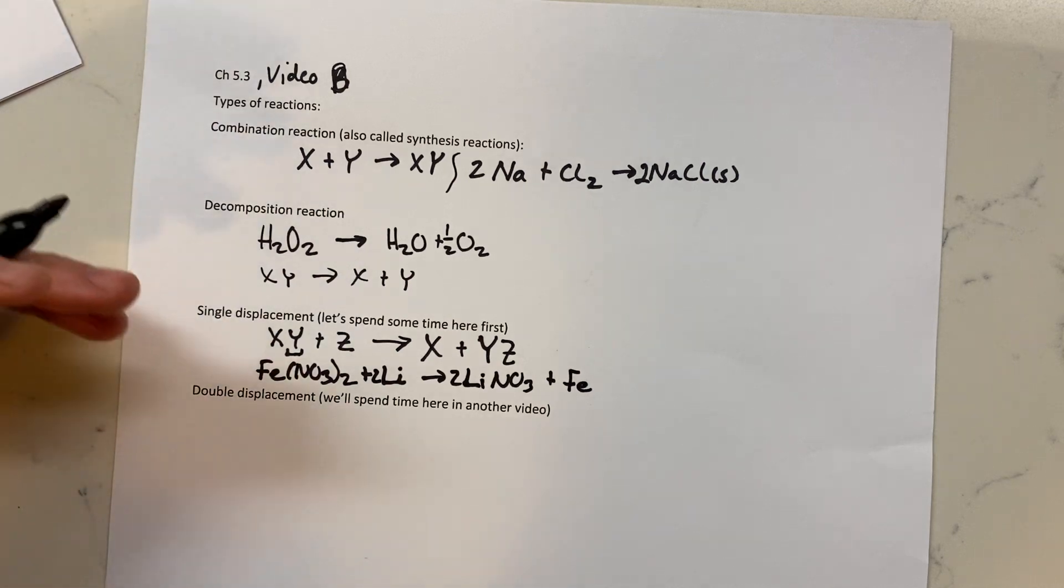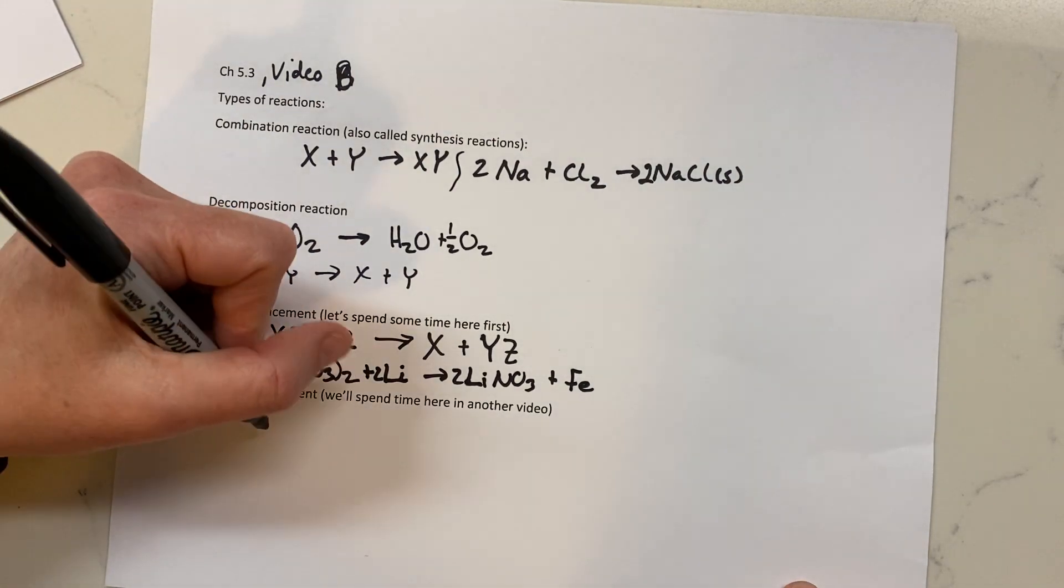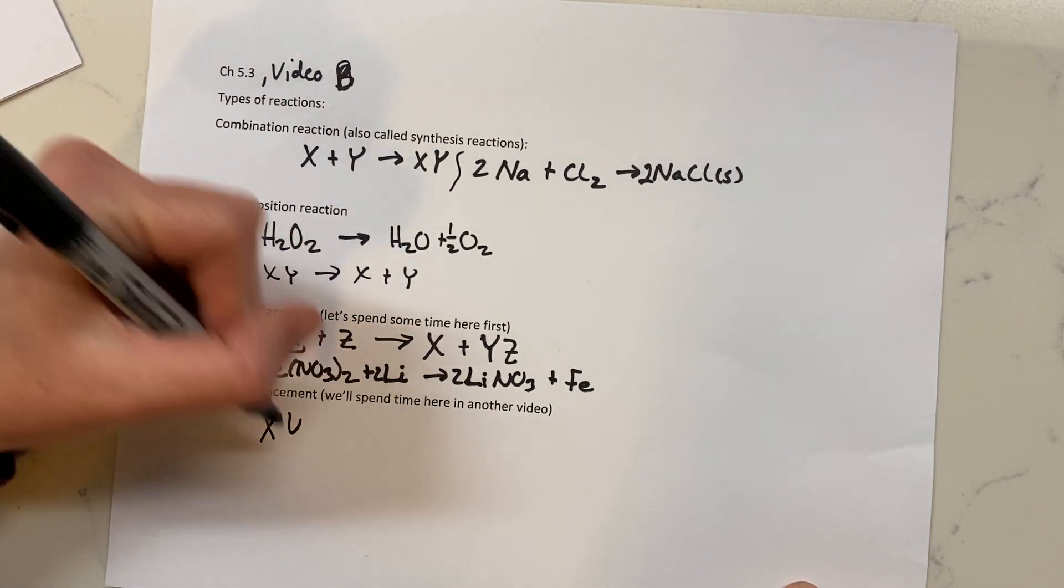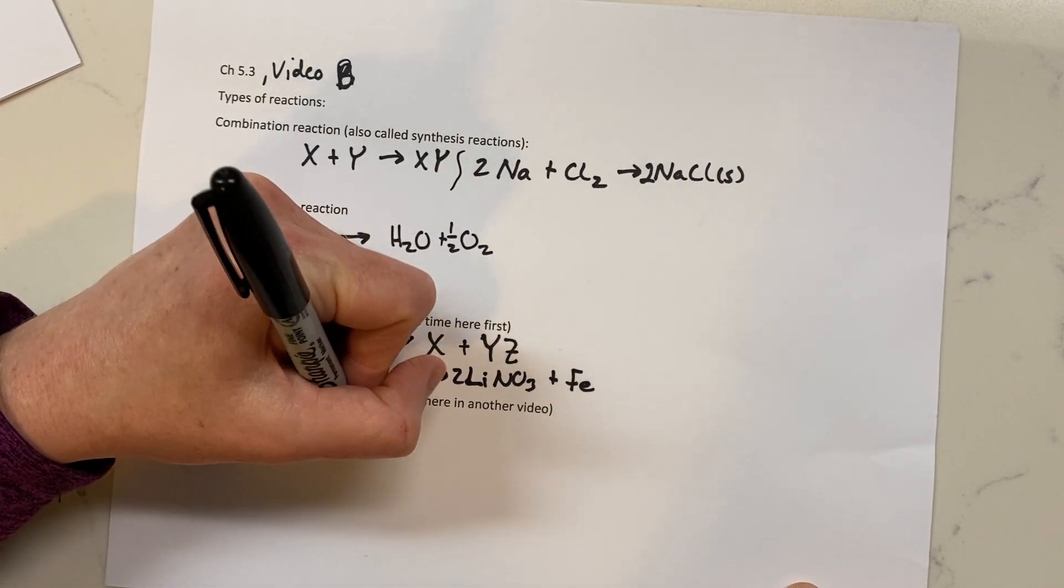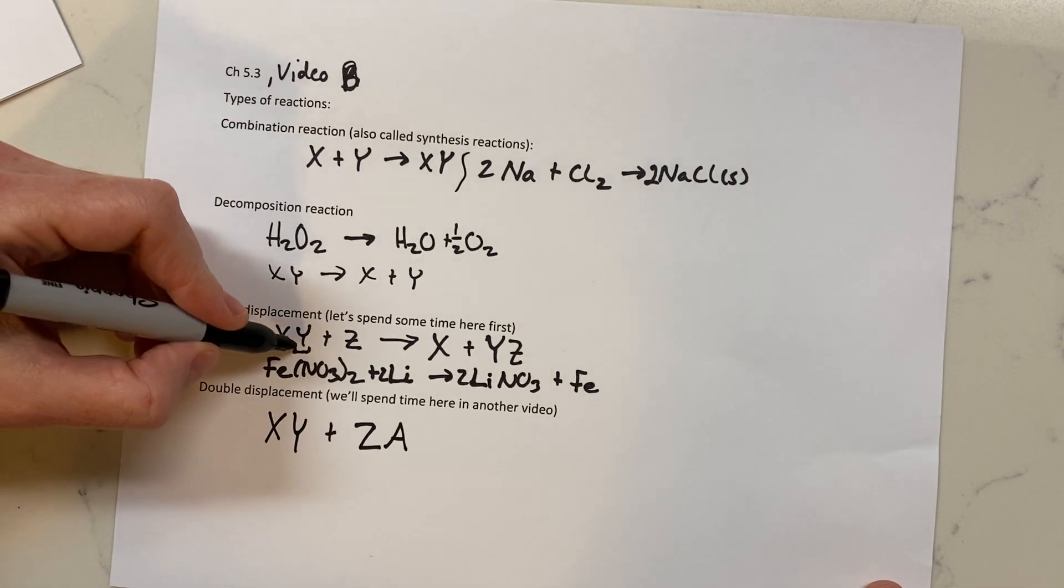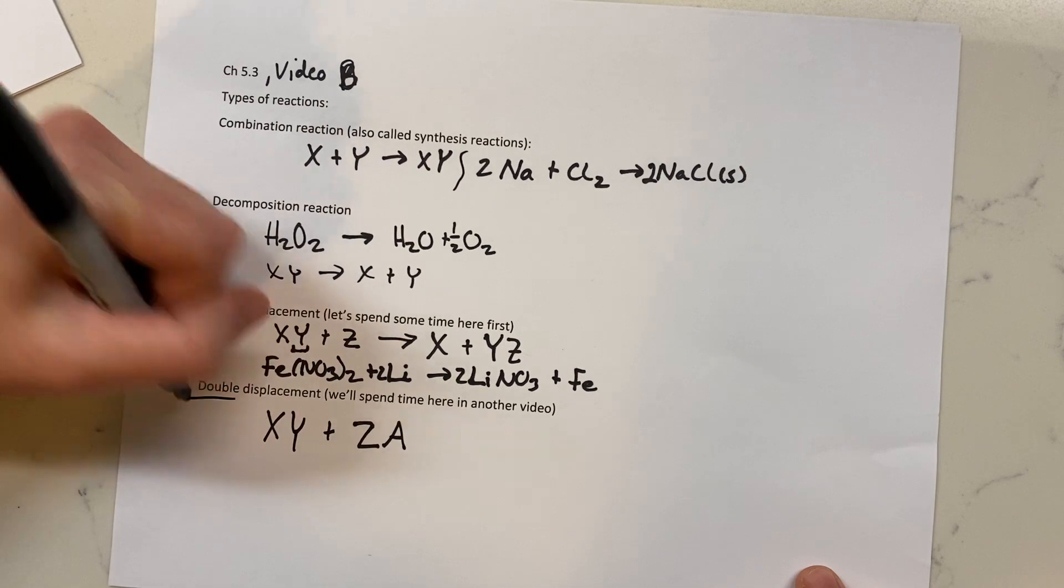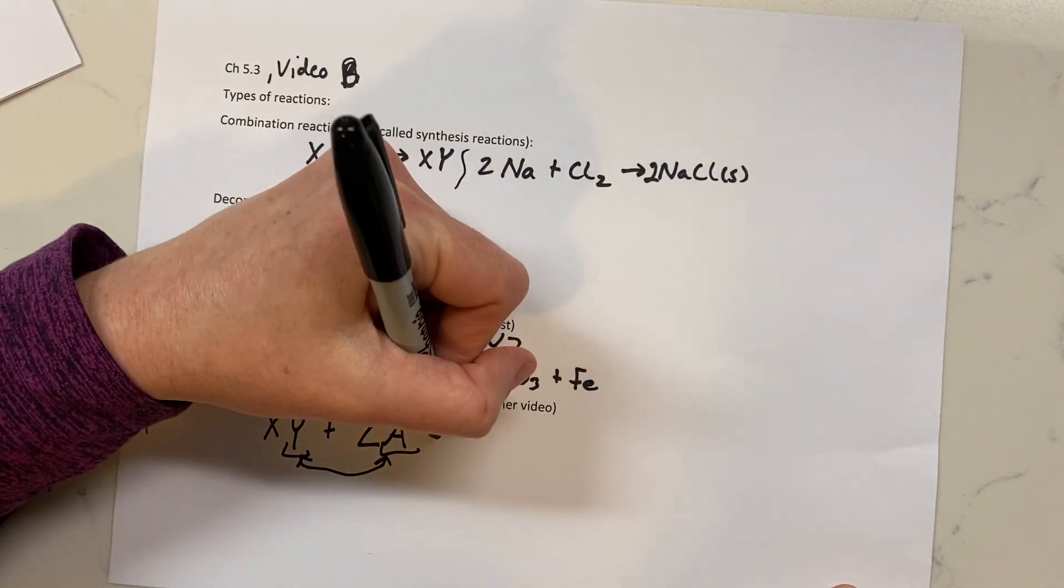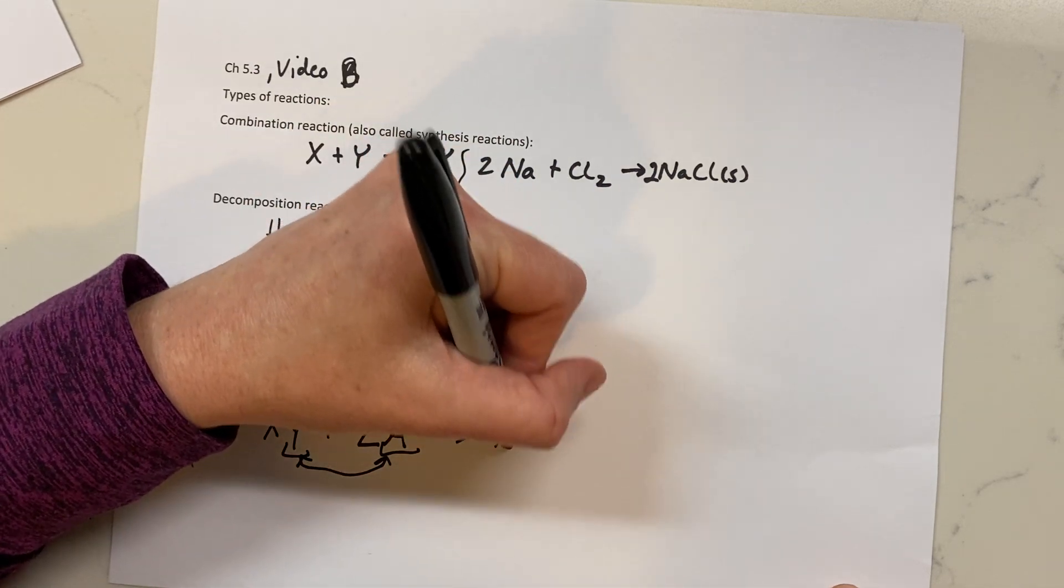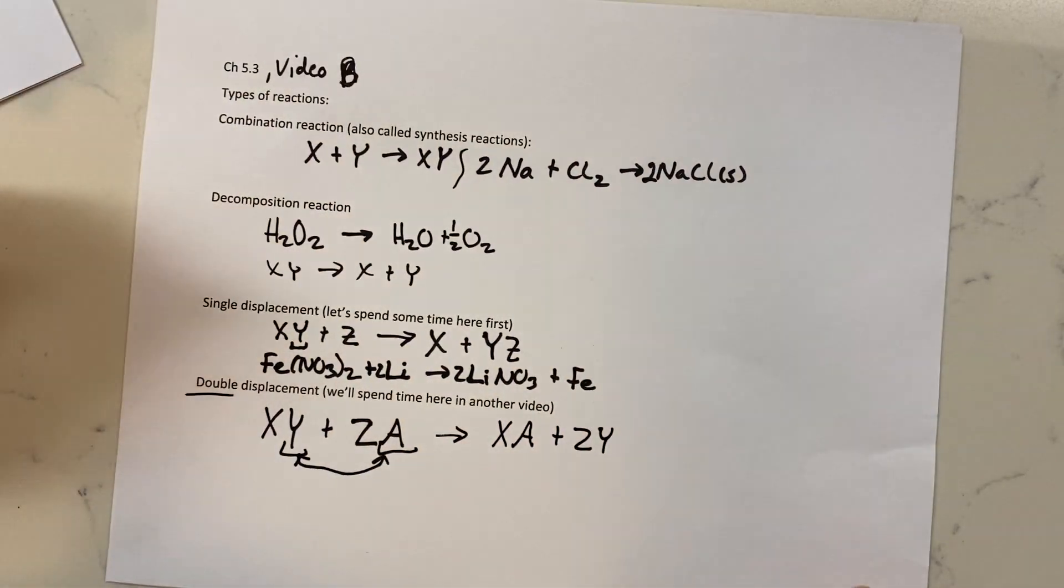Now a double displacement, we'll spend a lot more time here in another video. But our next one is going to be a double displacement reaction. Here's where we have some kind of XY plus ZA. Remember, in a single displacement, we had one thing move over. But here we've got a double displacement. So essentially, we're going to have two things switch places. This will form some kind of XA plus ZY, and that's double displacement.